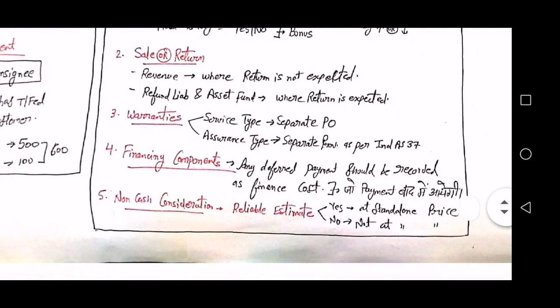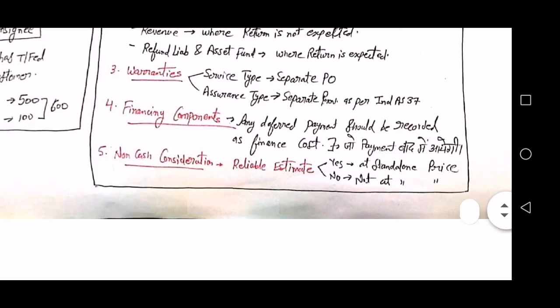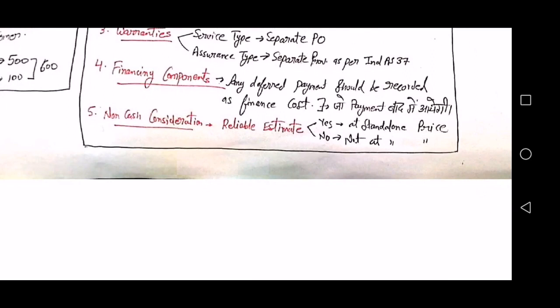In the case of sale or return: if a return is expected to be possible, you create a refund liability and a return asset; if not possible, you recognize the full revenue. Warranties can be service type — treated as a separate performance obligation — or assurance type — where you create a separate provision under Ind AS 37. Deferred payment should be treated as a finance cost. Non-cash consideration, if reliably estimated, is recognized at standalone price; if not reliably estimated, it cannot be recognized at standalone price.